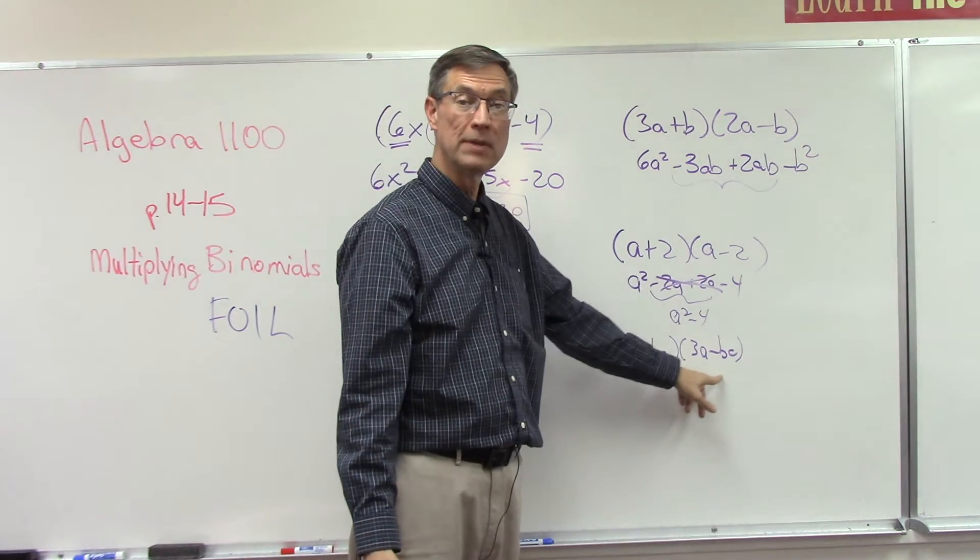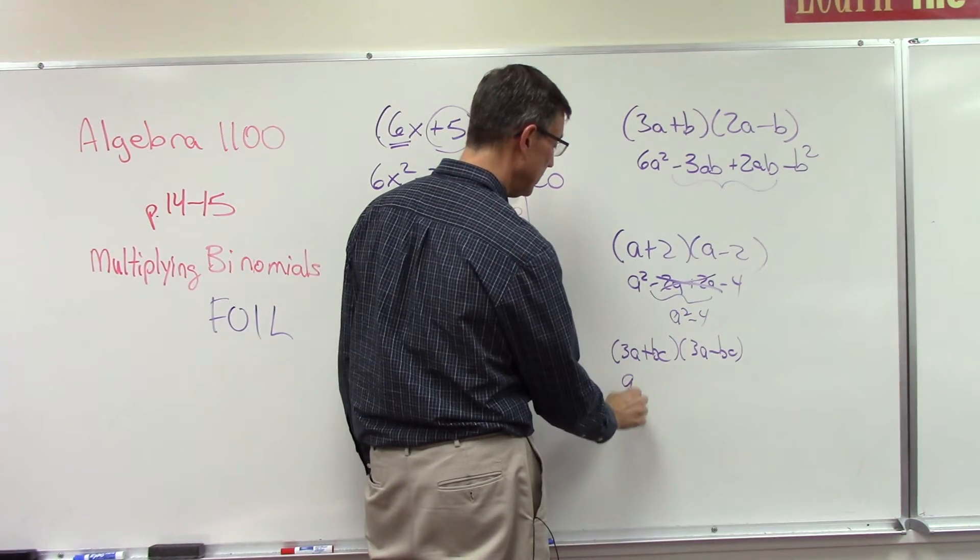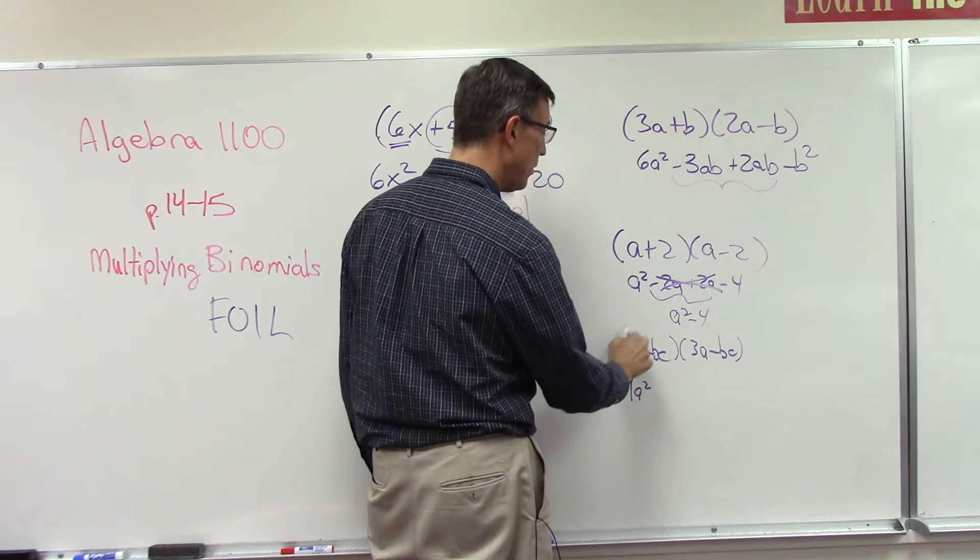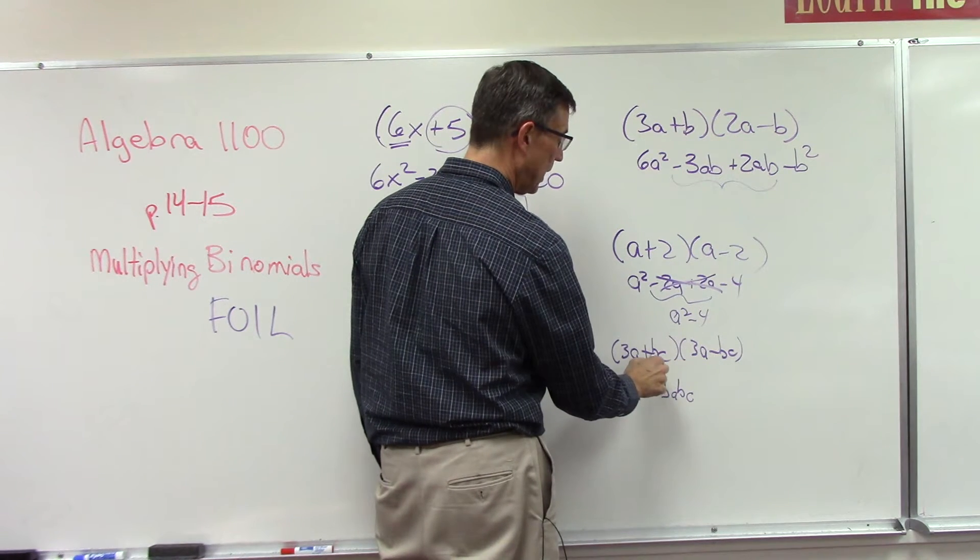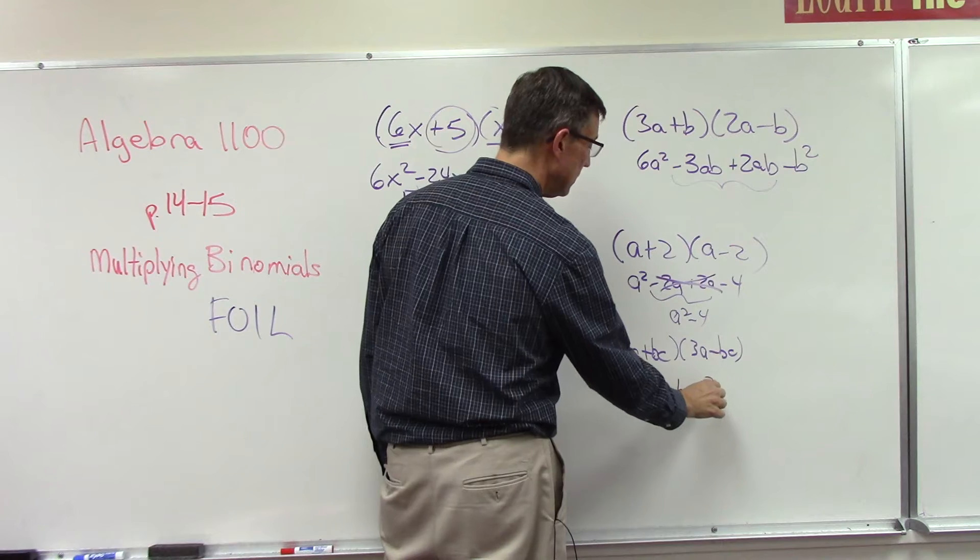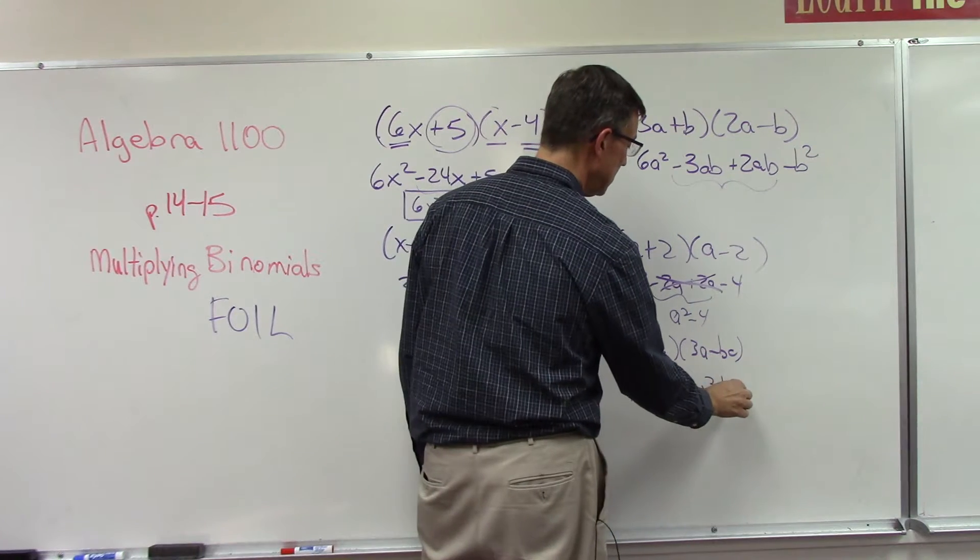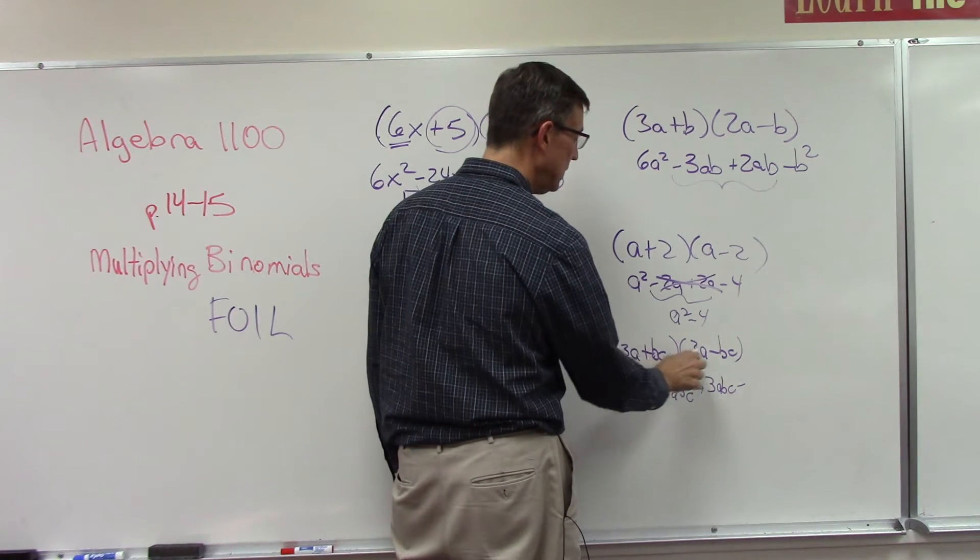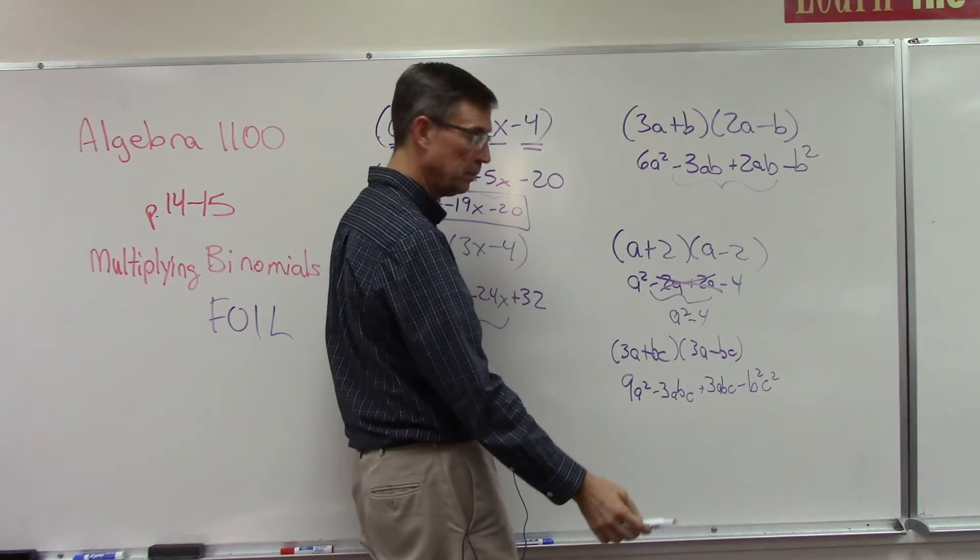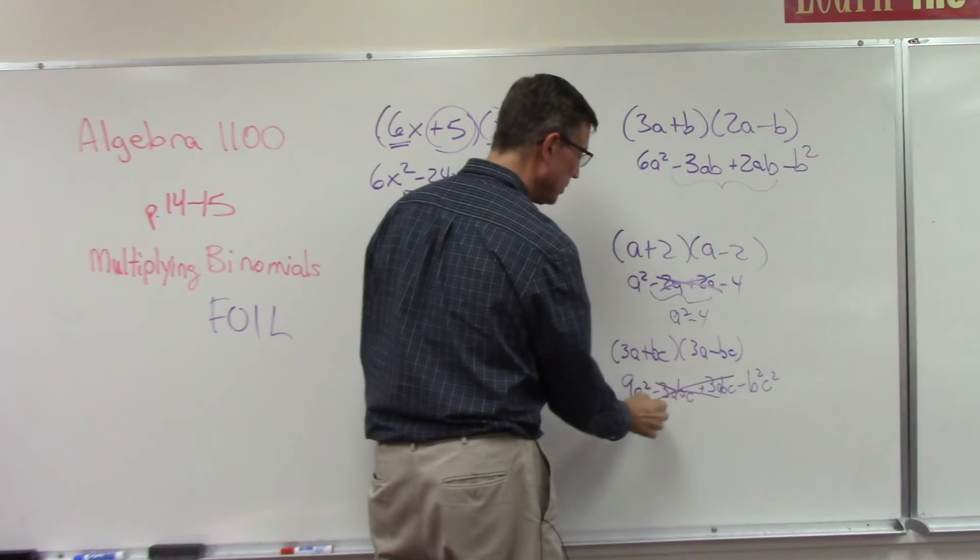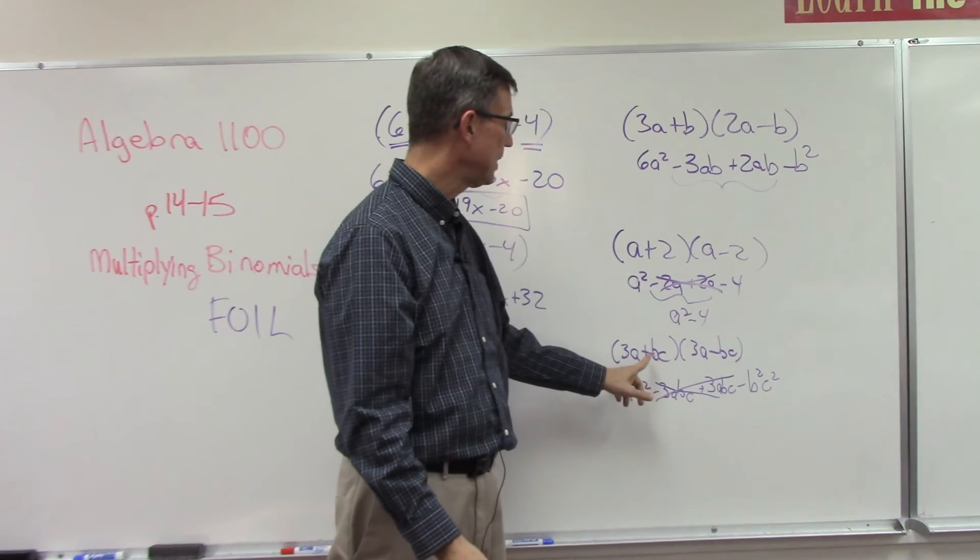Now this can work too with even complicated expressions like double variables here. What's 3a times 3a? 9a squared. Let's do the outer: negative 3abc. What happens here in the middle? We have positive bc times 3a, so positive 3, again I'm going to put them in alphabetical order, we don't have to but I like that. Positive times negative is negative, and then I have bc times bc which is b squared c squared. Are you with me? And then these are going to cancel out.